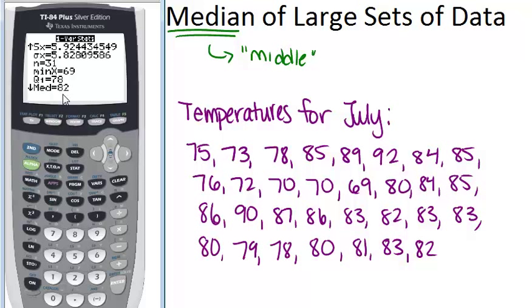So the median was 82 degrees, and the calculator could help us figure that out without us having to re-sort all of these numbers into order from smallest to largest and then look for the middle number.